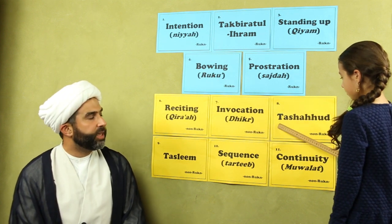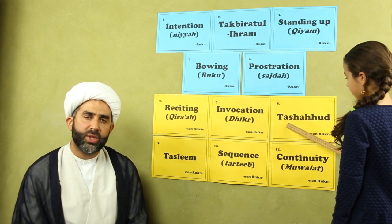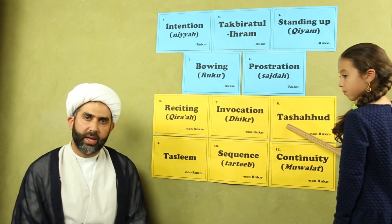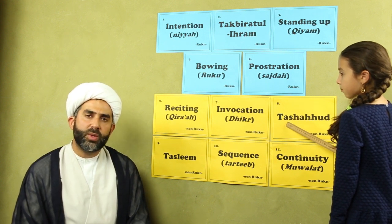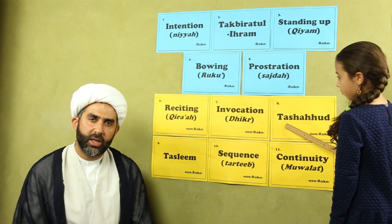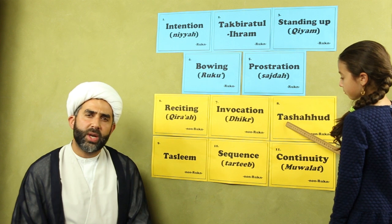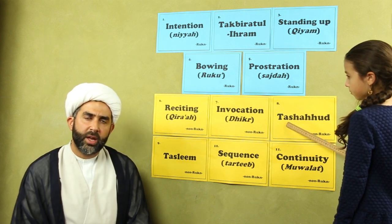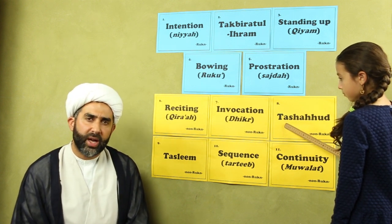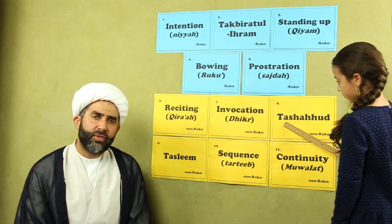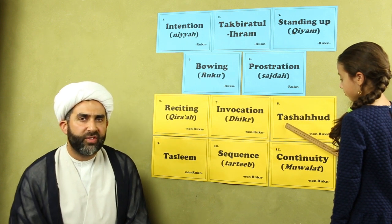Number eight is tashahud. In the second raka'ah, when you finish off with the two sajdahs, you need to sit back down and recite the tashahud. Tashahud is when you say: Alhamdulillah, ashhadu an la ilaha illallah, wahdahu la sharika lah, and so forth. You recite this in the second raka'ah, and also in the last raka'ah of a three or four raka'ah prayer — that is the second and third for a three-raka'ah prayer, and the second and fourth for a four-raka'ah prayer.